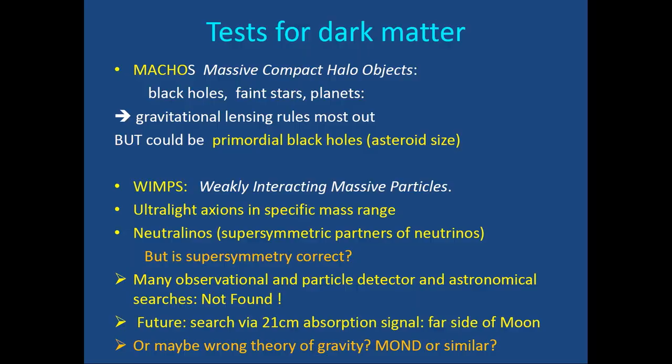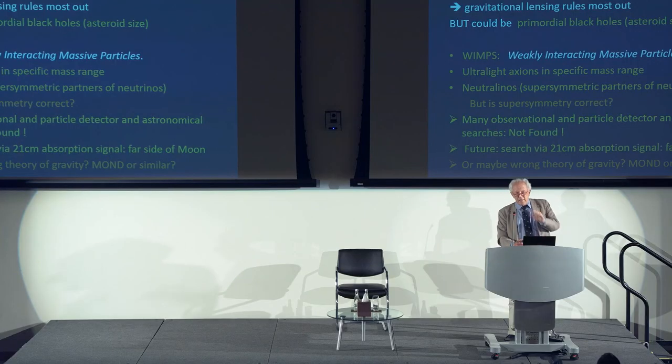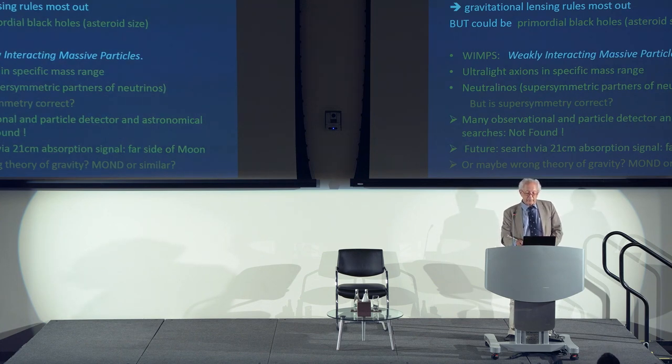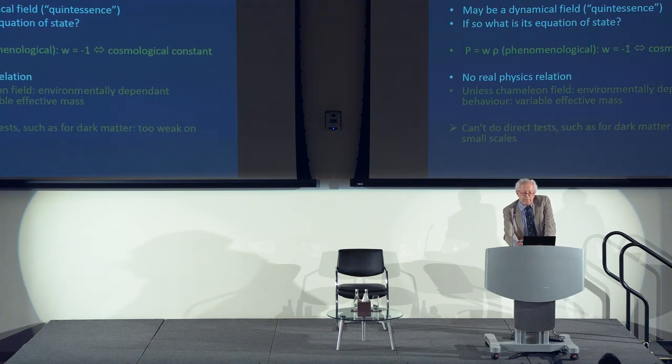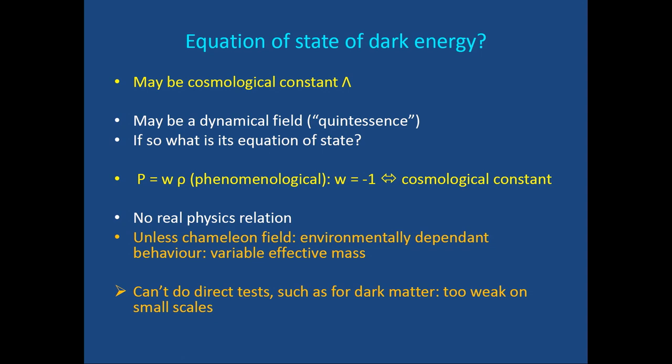Future searches may use 21-centimeter absorption lines from the far side of the moon — away from Earth's radio interference — as suggested by Joe Silk. One important possibility is that we are using the wrong theory of gravity: modified Newtonian dynamics or similar alternatives might resolve dark matter without new particles. For dark energy, it might be a cosmological constant or a dynamical quintessence field that changes with time, with equation of state p = wρ where w must be determined observationally.